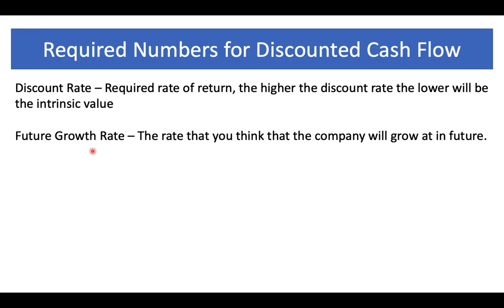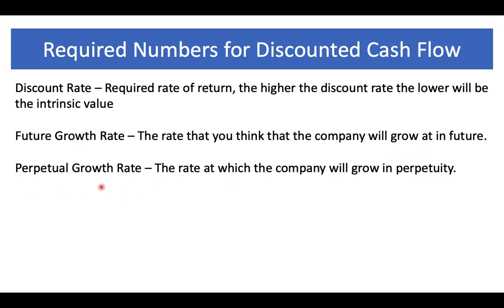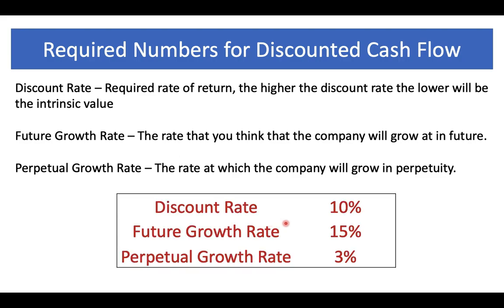The next thing we need is the future growth rate, because you have to estimate future cash flows going forward. This is the rate at which you think the company will grow in the future. The final input is the perpetual growth rate — the rate at which you think the company will grow in perpetuity. For example, you estimate cash flows for the next five or ten years, but after that it's hard to estimate, so you become very conservative and reduce the growth rate to something like 2–3%. I'll be using a discount rate of 10%, a future growth rate of 15%, and a perpetual growth rate of 3%.